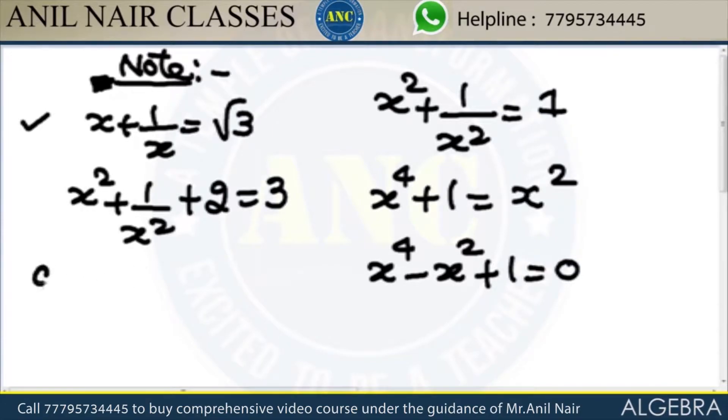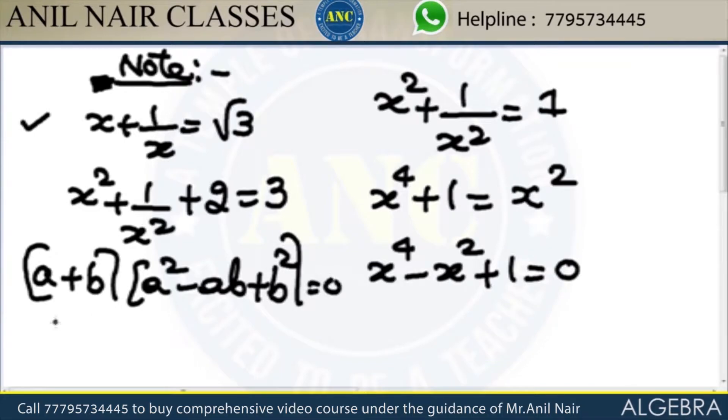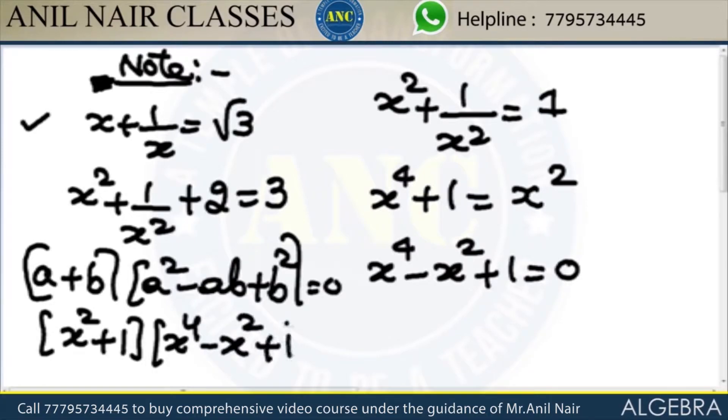Already we discussed a plus b into a square minus ab plus b square is 0. So this will become x square plus 1 into x power 4 minus x square plus 1 is 0. So this is x power 6 plus 1 is 0.